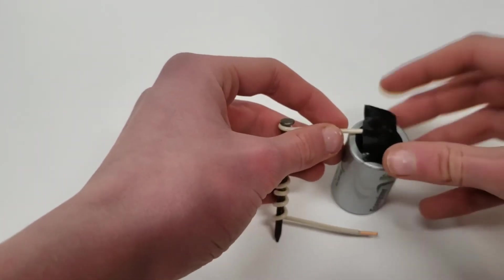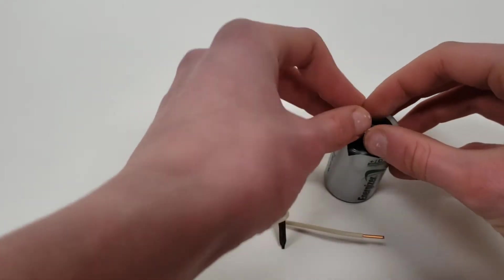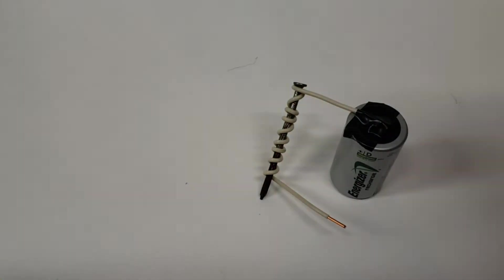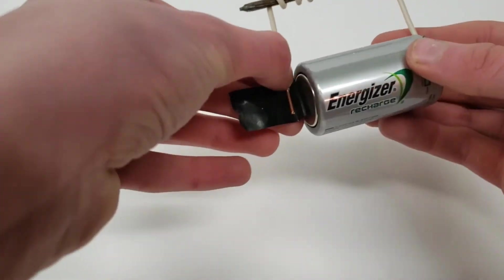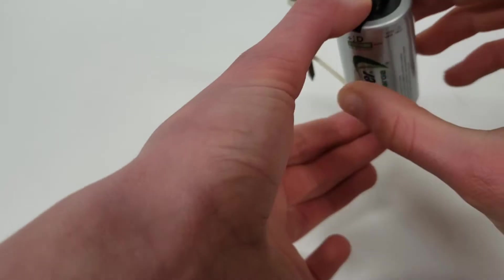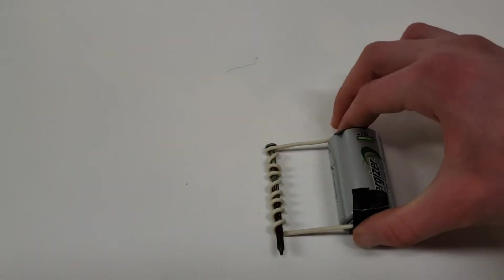To add the electromagnet onto the battery, all you have to do is just add some electrical tape and tape the open end of the wire to one end of the battery, and then do the exact same thing for the other end of the wire and the other end of the battery. And once you're done with that, it should look something like this.